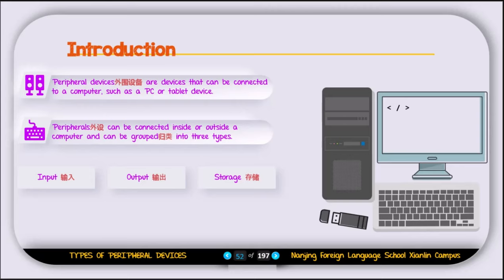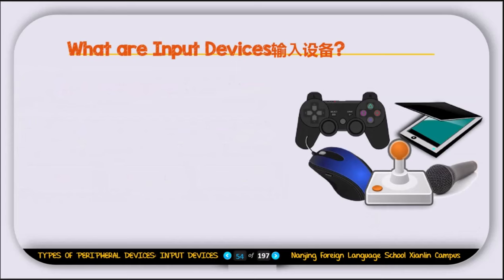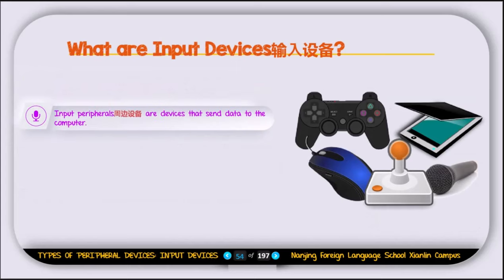In this class we discuss input devices. Input peripherals are devices that send data to the computer. Every device that sends data to the computer is called an input device or input peripheral. For example, we have the microphone, mouse, scanner, controller, and joystick — these are all examples of input peripherals.